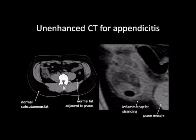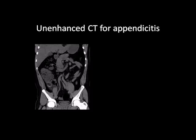These coronal images are from the same patient. Again, notice that the vessels within the abdomen and pelvis are not filled with IV contrast, nor is the bowel opacified with oral contrast. In the patient's right lower quadrant, there is inflammatory fat stranding surrounding the cecum and appendix.